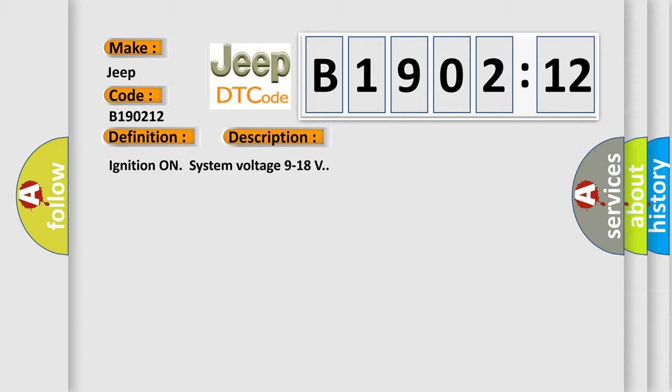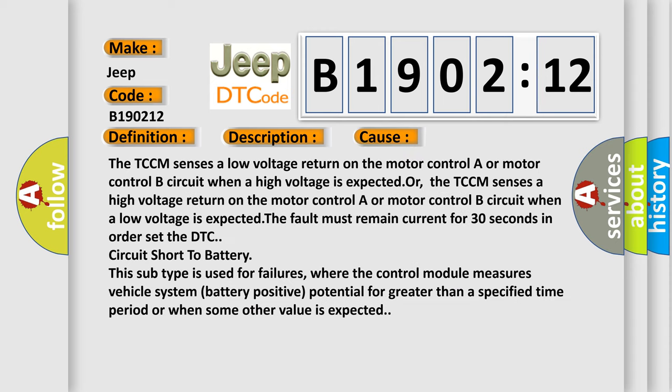This diagnostic error occurs most often in these cases. The TCCM senses a low voltage return on the motor controller or motor control B circuit when a high voltage is expected, or the TCCM senses a high voltage return on the motor control A or motor control B circuit when a low voltage is expected. The fault must remain current for 30 seconds in order to set the DTC. Circuit short to battery. This subtype is used for failures where the control module measures vehicle system battery positive potential for greater than a specified time period or when some other value is expected.